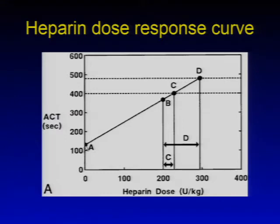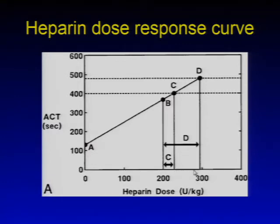The heparin dose response curve can be used to titrate heparin. The baseline ACT is measured, then 300 units/kg of heparin is given and the resulting ACT is plotted. A line is drawn between the baseline and the therapeutic ACT. During CPB, if the ACT drops — for example, from 500 to 400 seconds — the corresponding top-up dose is calculated and administered. This curve is also used at the end of bypass to reverse heparin by titrating protamine.